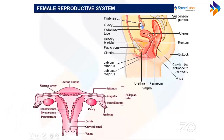The primary sex organs are the ovaries, two in number. They are called primary sex organs because they help in gametogenesis — the formation of gametes, specifically the ovum — as well as secreting sex hormones: estrogen and progesterone, which we will cover in upcoming classes.